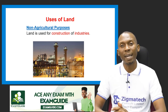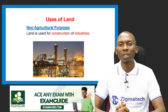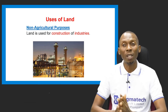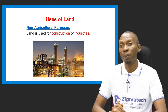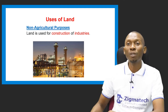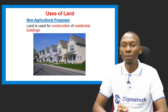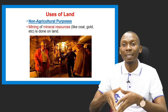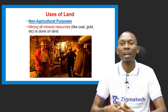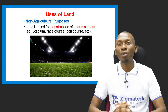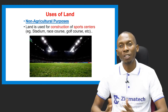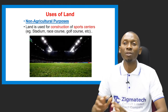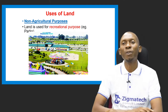For non-agricultural purposes, land can be used for the construction of industries and residential buildings for human habitation. Mining of mineral resources such as coal and gold also takes place on land. Land is also used for the construction of sports centers like stadiums, race courses, and golf courses.